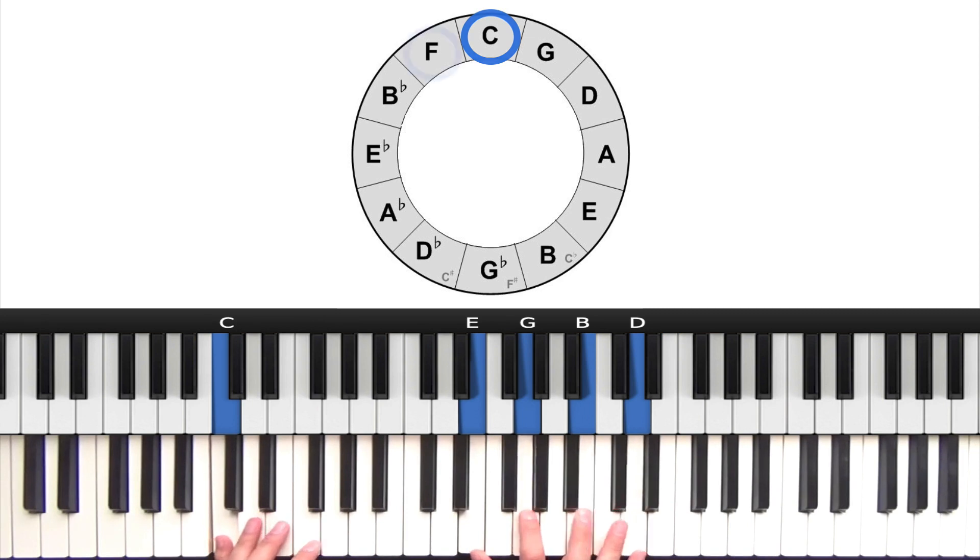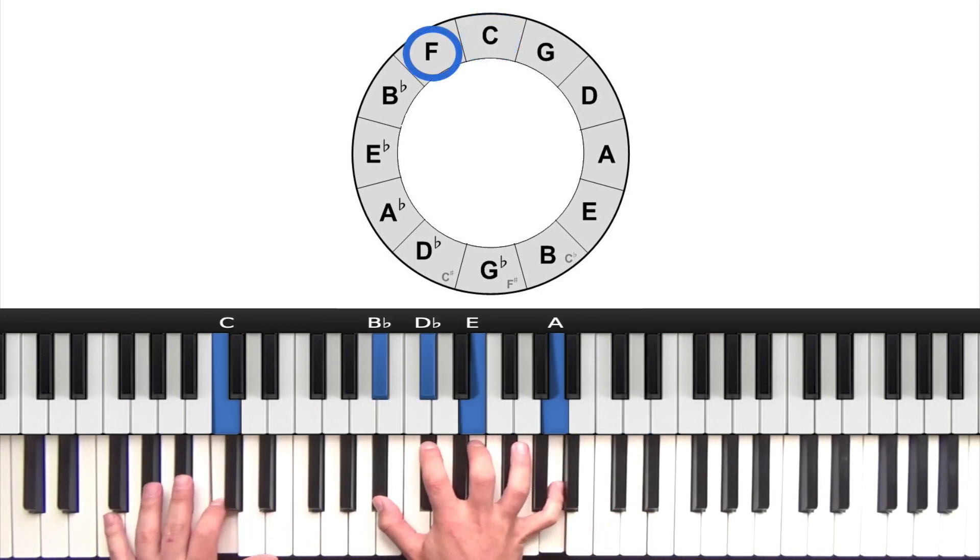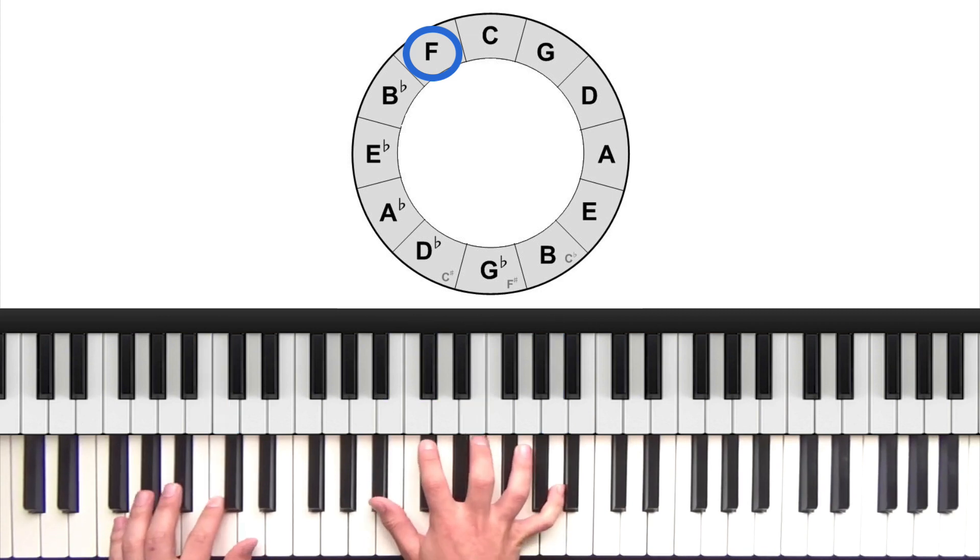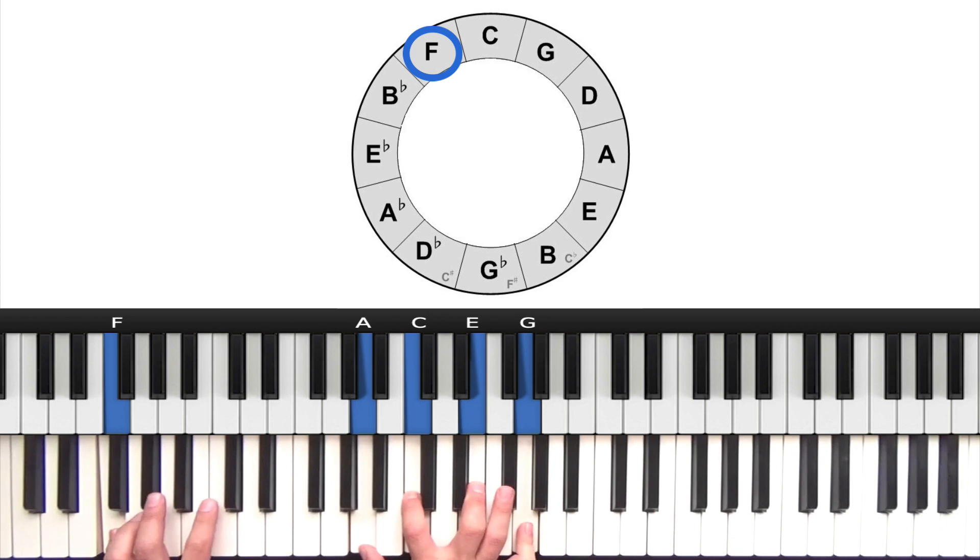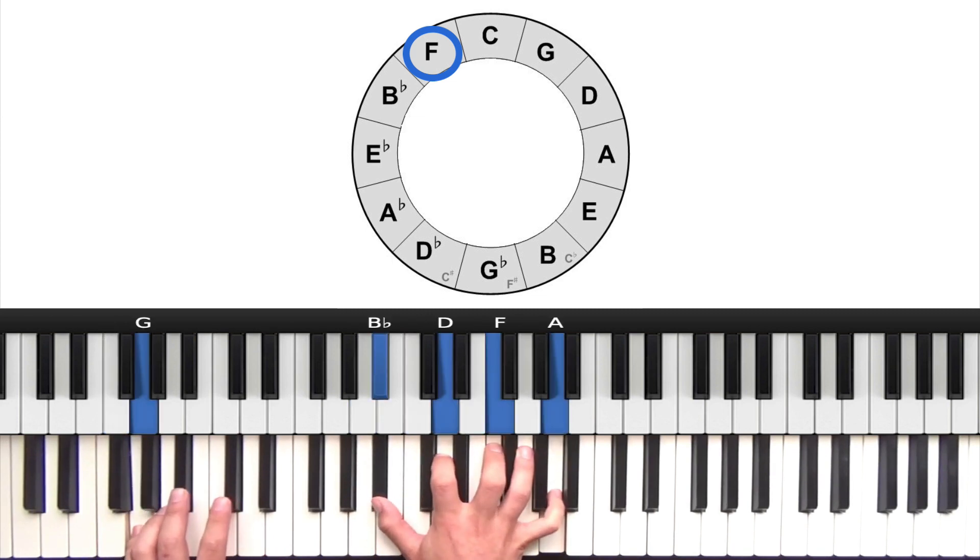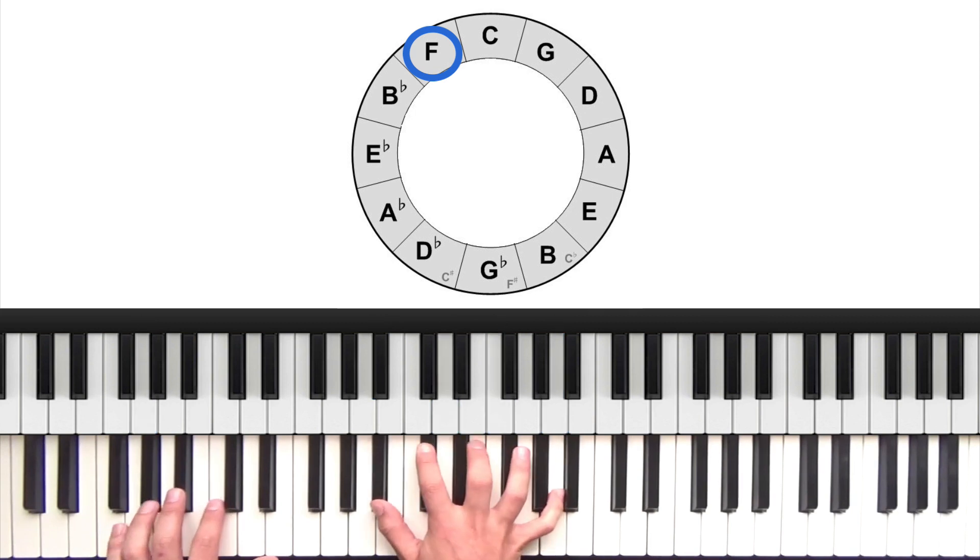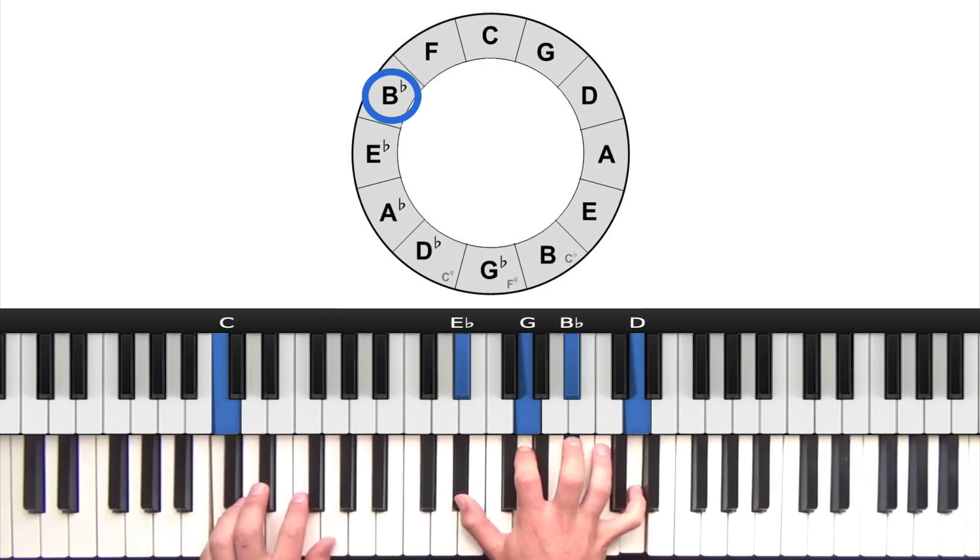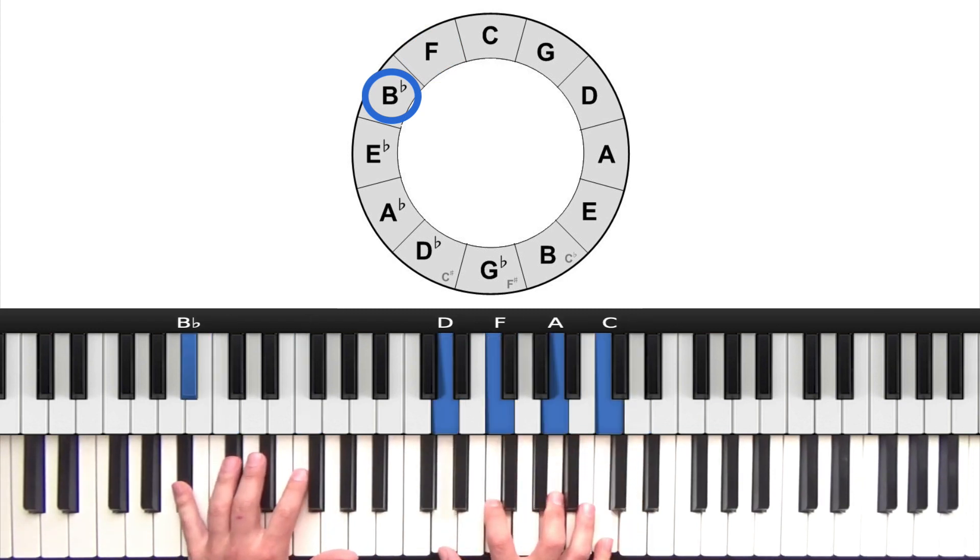So you can see there moving from G minor 7 to C7, we have the flat 7 falling by a half step, and now we've also dropped the 5th of the two chord by a half step. And that gives us that flat 9, and then into the 1. So notice as well that we have this inner voice leading. A 2-5-1 in B flat.